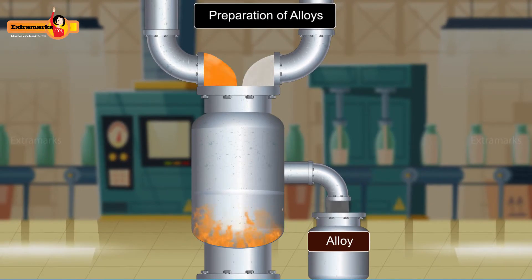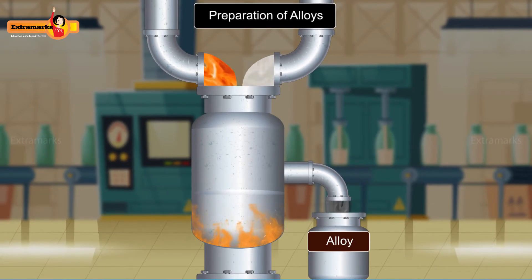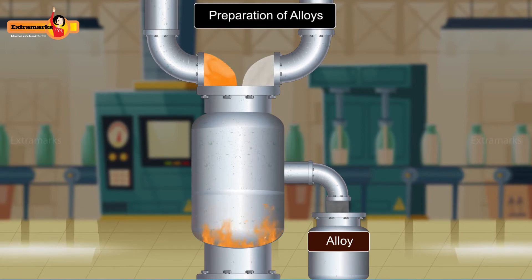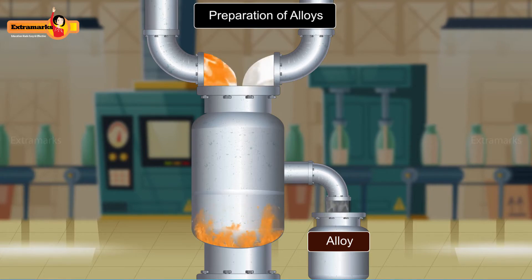An alloy can be prepared by first melting the main metal, followed by dissolving the other constituents in it in definite proportions. The mixture so obtained is then cooled to room temperature to get the desired alloy.